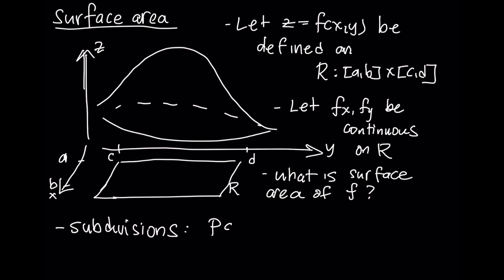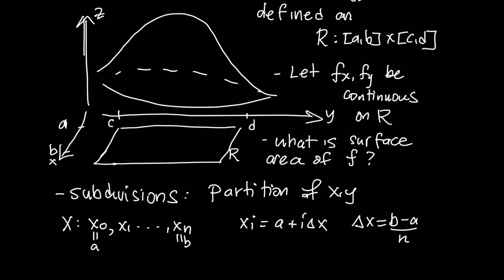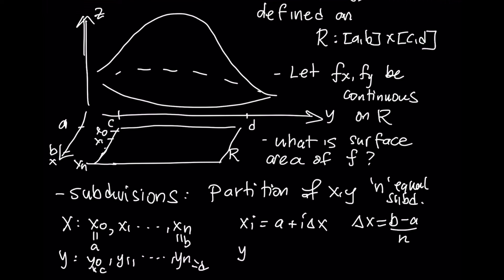We are going to make a partition of the x and y values. The x values will be partitioned into grid points x0 all the way up to xn. This will be our starting value a and ending value b. xi will simply be a plus i bunches of delta x, and delta x is b minus a over n, giving us n equal subdivisions. Similarly, y will have an initial point y0 equal to c, up to yn equal to d, with general point yj equal to c plus j delta y, using the same number of subdivisions for simplicity.